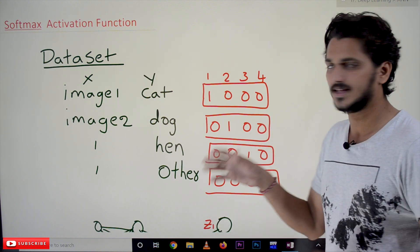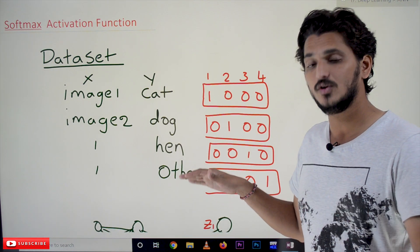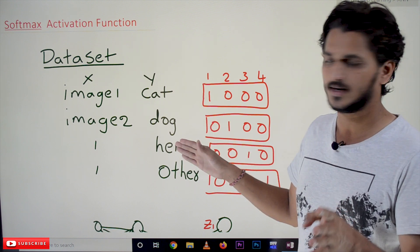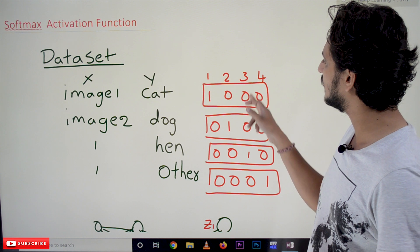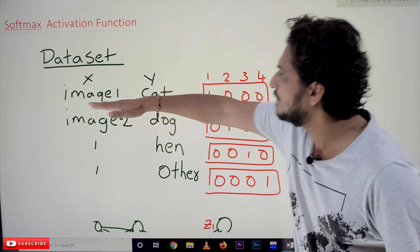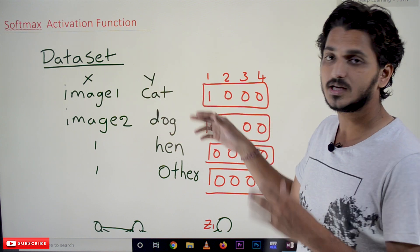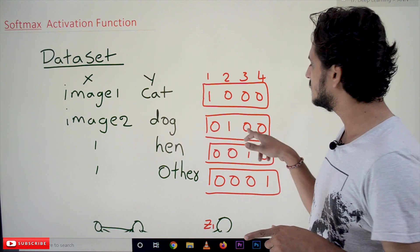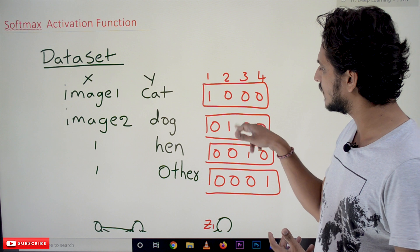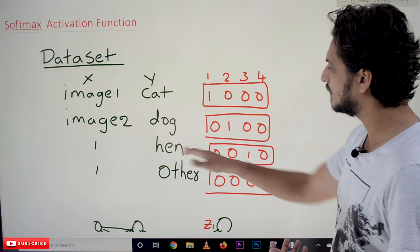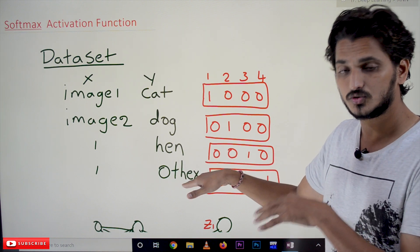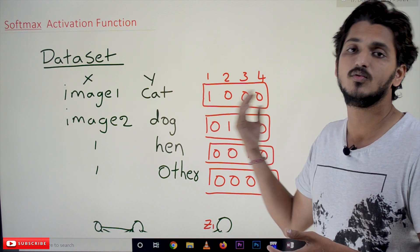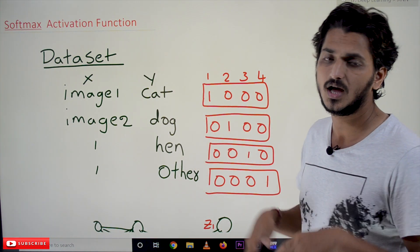Y is converted into a vector. We have 4 categories: 1 is cat, 2 is dog, 3 is hen, and 4 is others. For image 1 (cat), we place 1 in the first position and 0 elsewhere, giving [1,0,0,0]. For the dog image it becomes [0,1,0,0], for hen [0,0,1,0], and for the other category [0,0,0,1]. This is how we convert actual values into a 4×1 dimensional vector. We will understand why we do this when we discuss the Softmax function.